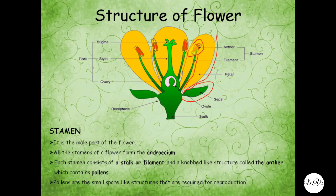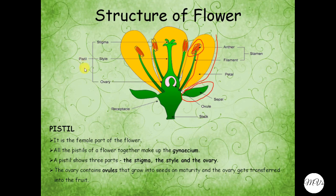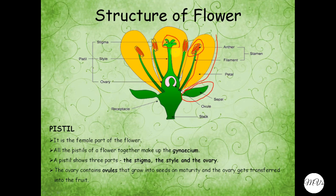The red part are the pollens, which are small spore-like structures that are required for reproduction. The next is pistil. It is the female part of the flower. All the pistils of a flower together make up the gynecium. A pistil shows three parts: the stigma, the style, and the ovary. The ovary contains ovules that grow into seeds. The pink part in the ovary is the ovule that grows into seeds on maturity, and the ovary gets transferred into the fruit.